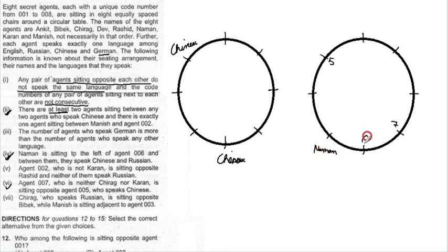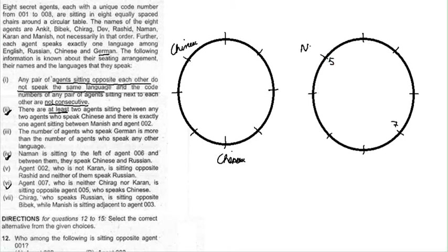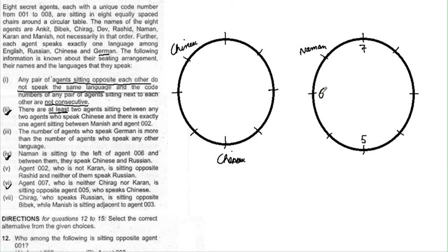Applying the fourth condition with agent 005's position: Naman to the left of 006, but placing Naman adjacent to 7 makes 6 and 7 consecutive, which violates the rule. Testing all cases, the only valid arrangement is Naman at one position and 006 two seats away, with 5, 6, and 7 not consecutive. Since Naman speaks Chinese and is adjacent to 005, agent 006 must speak Russian.